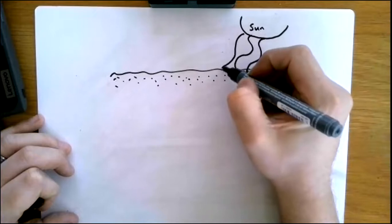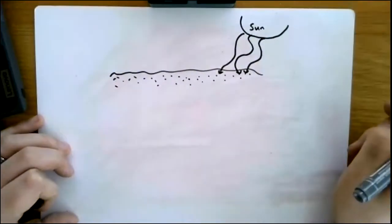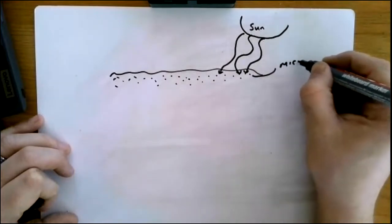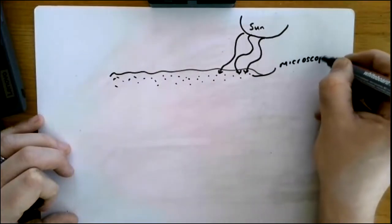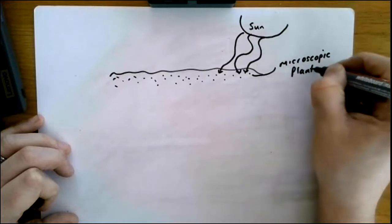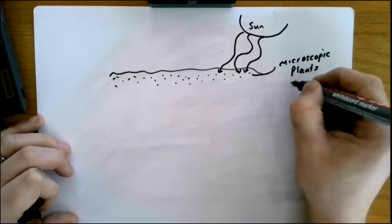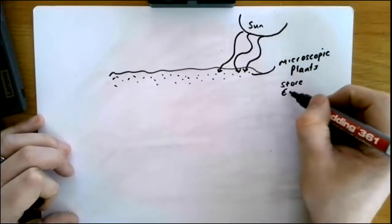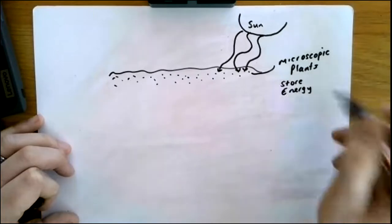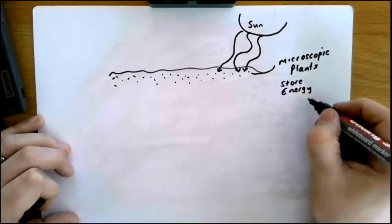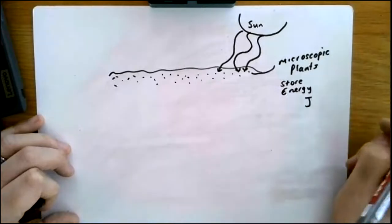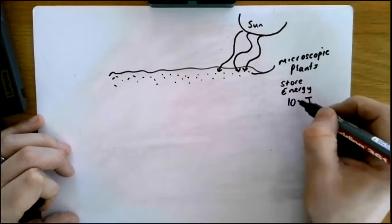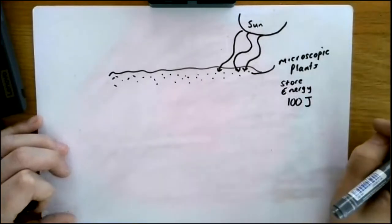Energy is transferred from the Sun to the top parts of the ocean, and here plants can absorb that energy. These are microscopic plants and they store the Sun's energy. Energy is measured in joules, symbolized with a J. An example would be that an algae can store 100 joules of energy.